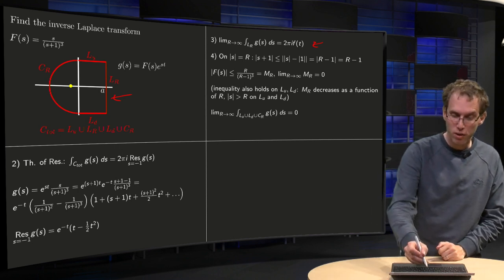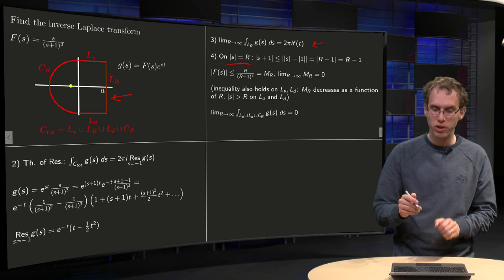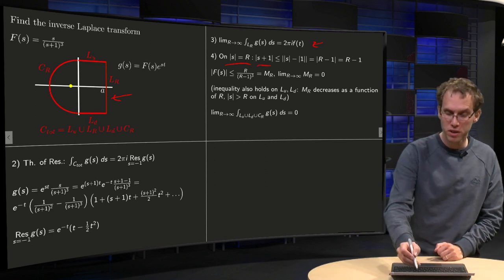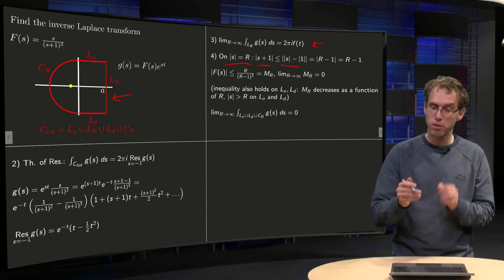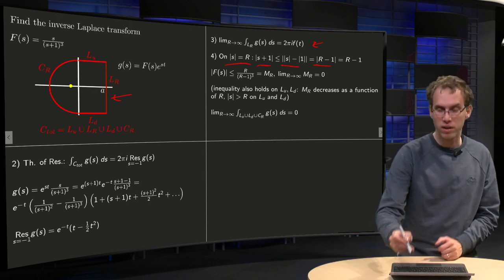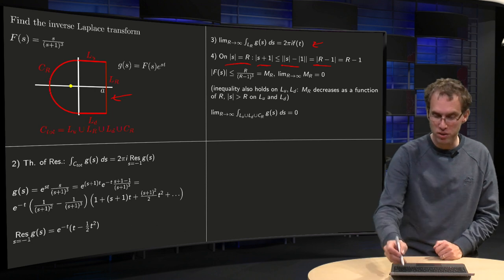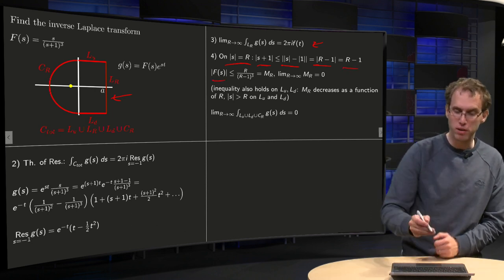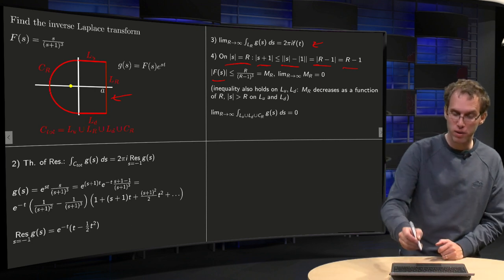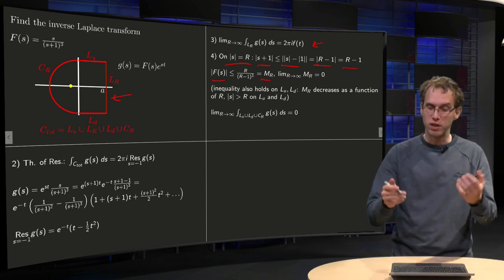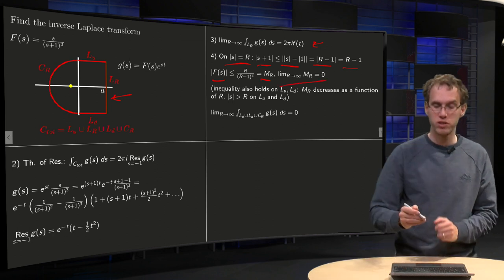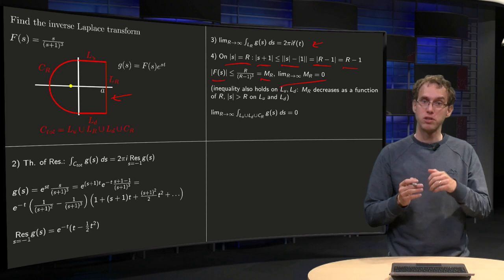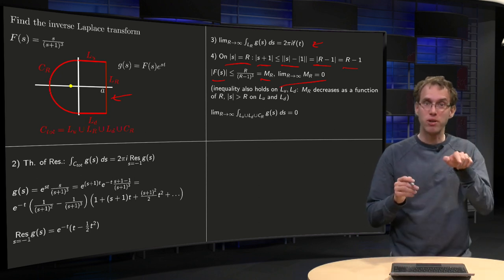Well, we know if norm of S is a constant, so if we are in circles, then norm of (S plus one), by reverse triangle inequality, is smaller or equal than norm of S minus norm of one, the absolute value of R minus one, and R is big, goes to infinity, so that it equals R minus one. So capital F of S is bounded by R over (R minus one) cubed equals MR. I see straight away that limit R to infinity, MR equals zero. So we see capital F of S is bounded by a constant going to zero if you are on a circle.